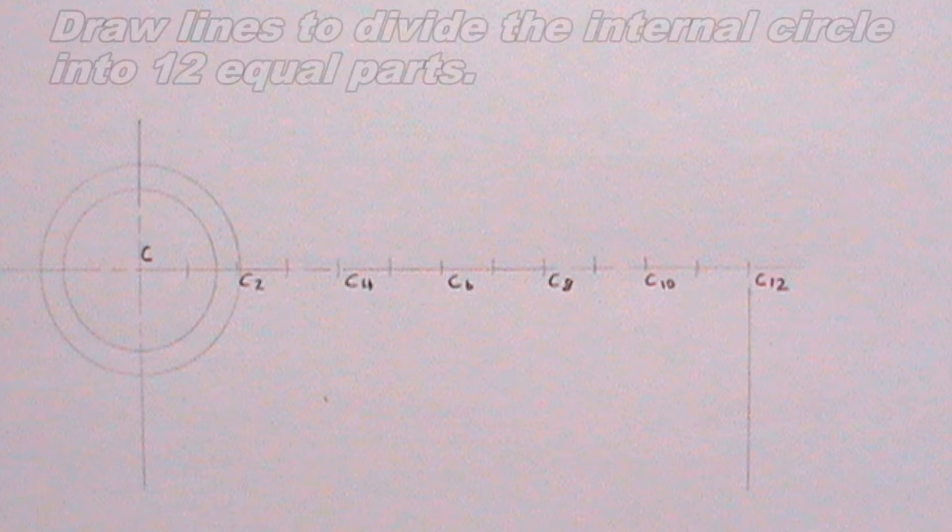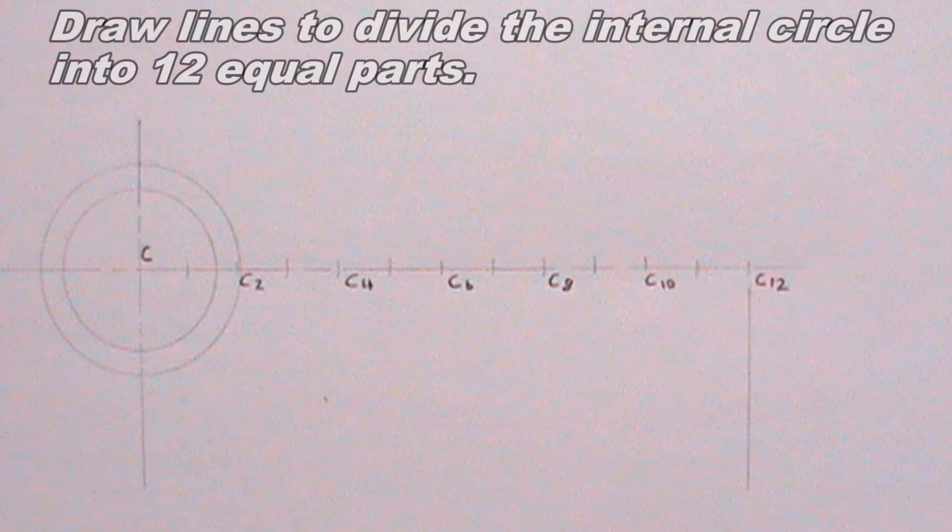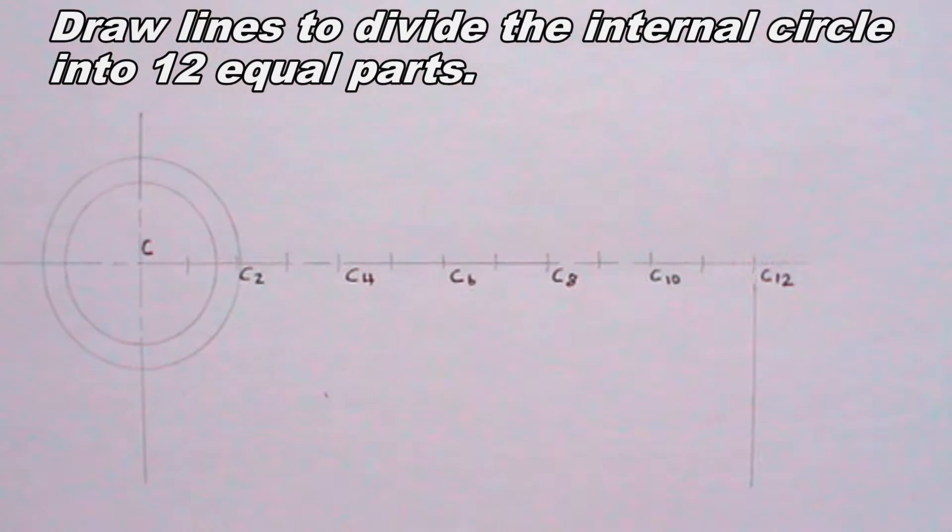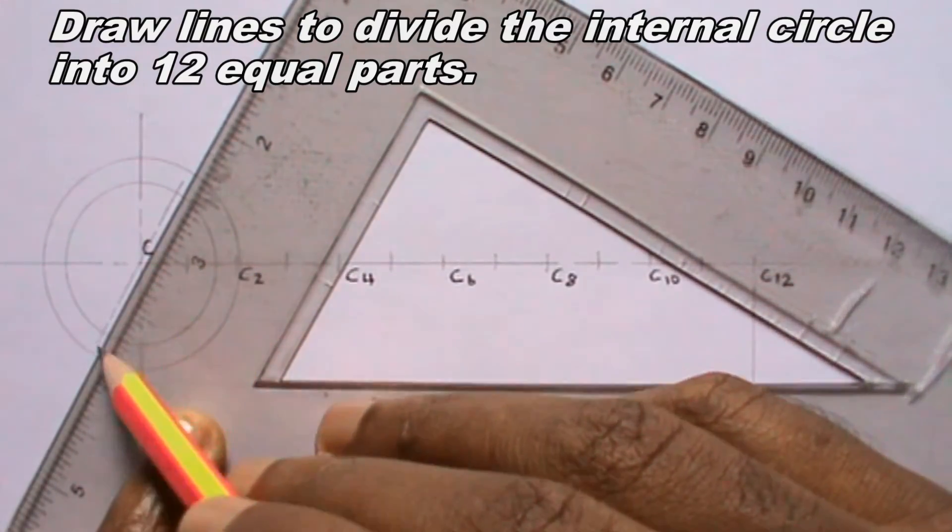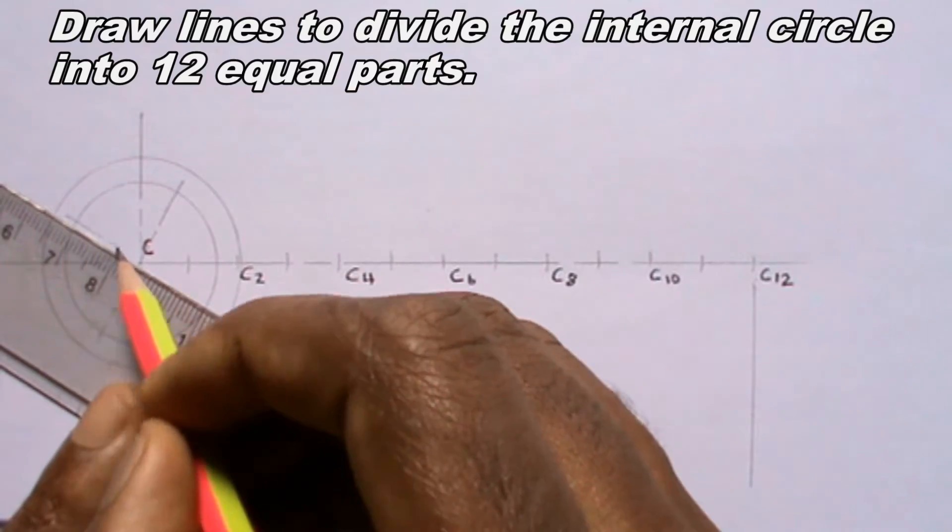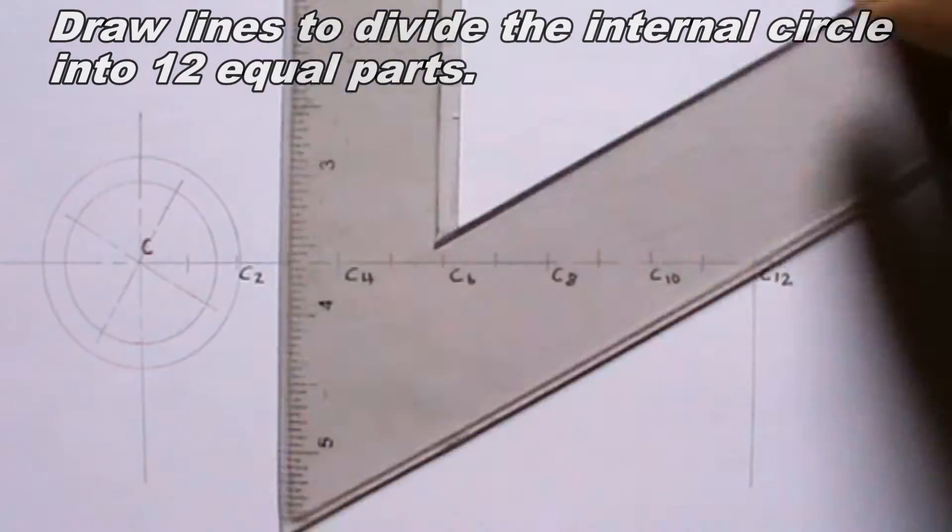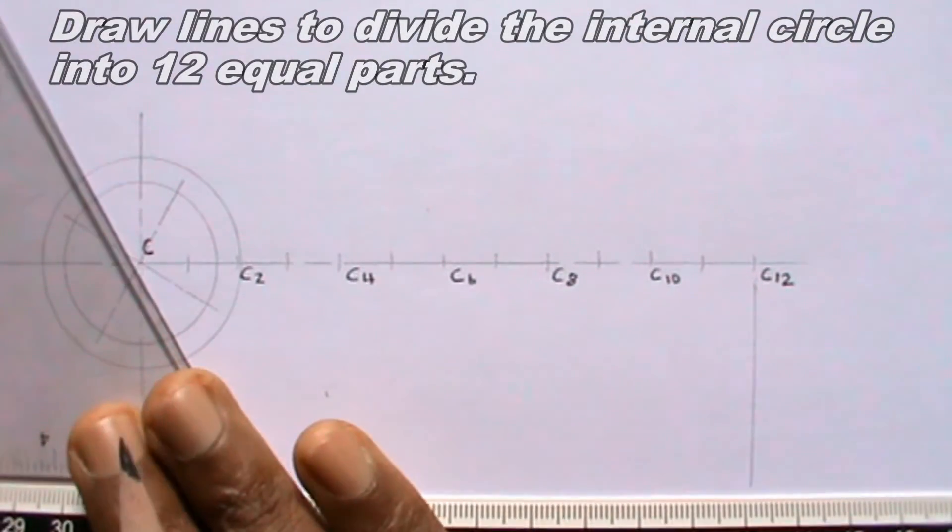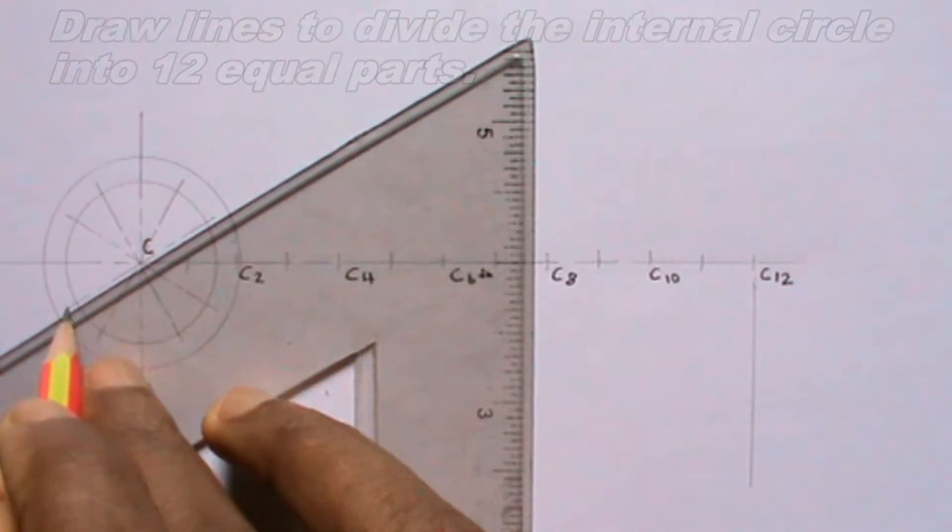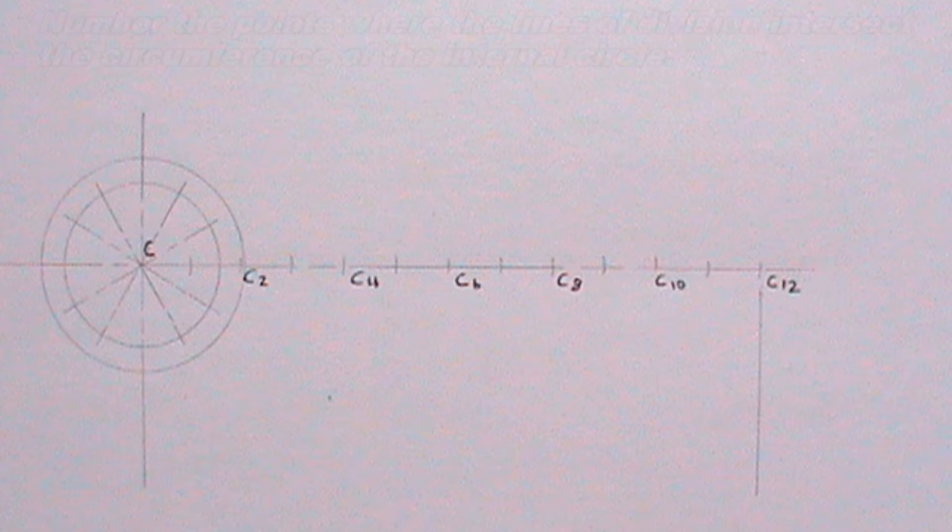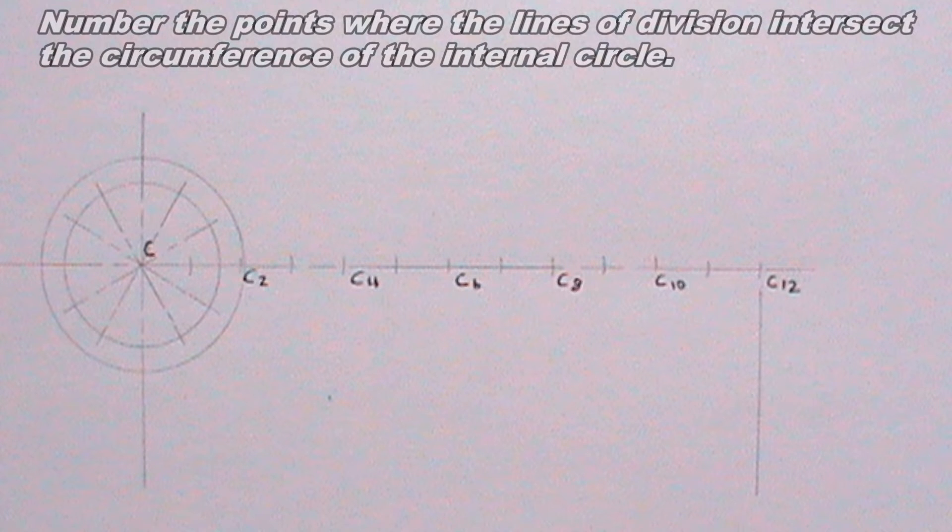I will draw lines to divide the internal circle into 12 equal parts. This can be done using a 60 degree set square. I will number the points where the lines of division intersect the circumference of the internal circle.